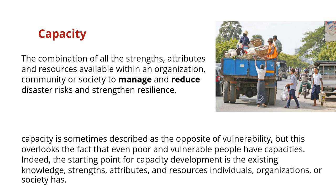The last component of the disaster risk function is capacity. Capacity is a combination of all the strengths, attributes, and resources available within an organization, community, or society to manage and reduce disaster risk and strengthen resilience. Capacity is sometimes described as the opposite of vulnerability, but this overlooks the fact that even poor and vulnerable people have capacities. The starting point for capacity development is the existing knowledge, strengths, attributes, and resources that individuals, organizations, or society already have.